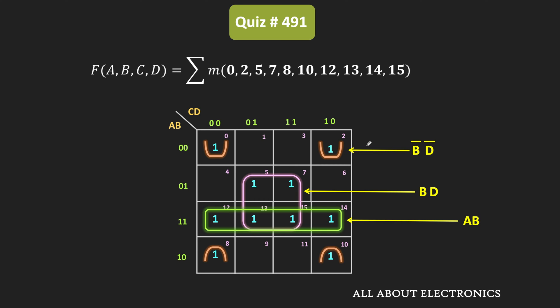By making these three groups, we are able to cover all the minterms. These three groups represent the prime implicants. Now we need to find out which of the given prime implicants are the essential prime implicants. The essential prime implicants are the prime implicants in which at least one minterm is not covered by any other prime implicant.